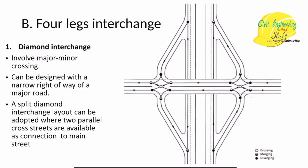Next we have the four-leg interchange. The first type is the diamond interchange, one of the most commonly used four-leg interchanges. It has four legs and involves the crossing of a major and minor road. In this example, the road at higher elevation crosses the road at lower elevation, and cross maneuvering movement can be facilitated between them.